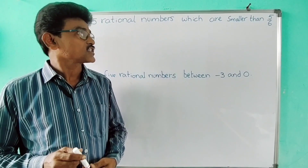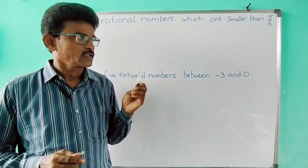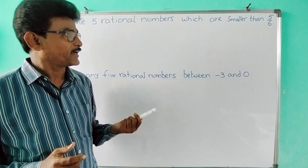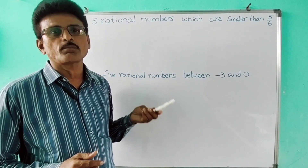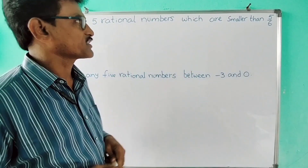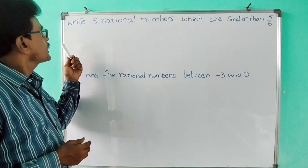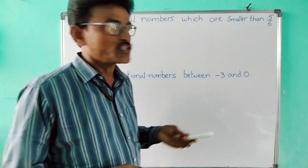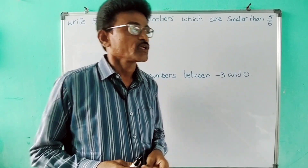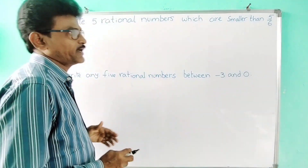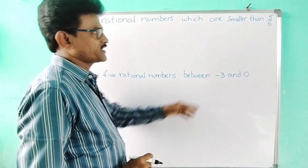Hello students, this is a video on rational numbers. In this video I will explain how to find the required rational numbers with respect to given rational numbers. In the first problem, I write five rational numbers which are smaller than five by six. I will explain in a very easy method. Five by six is in p by q form.